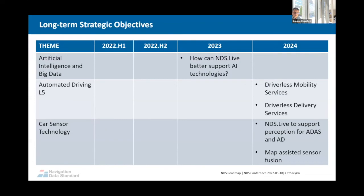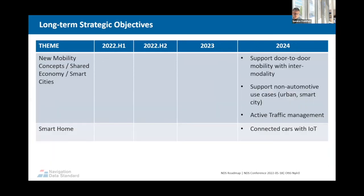Just quickly jumping over topics planned for next year or in two years: these are mainly related to AI technologies, the L5 domain — so driverless mobility, driverless delivery services — new mobility, and connected cars with IoT. These are also on our roadmap, currently on a long-term horizon. We're regularly tracking the trends and need more input from members to see if we need to change the priorities of these items.